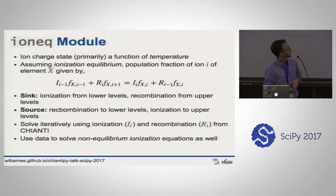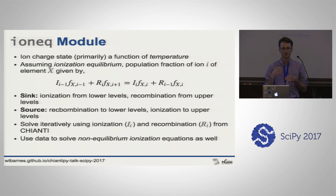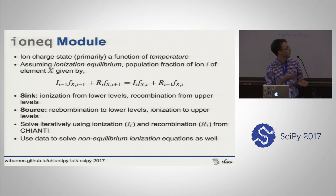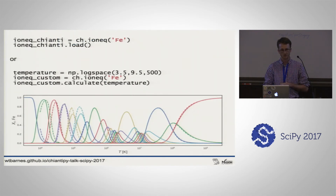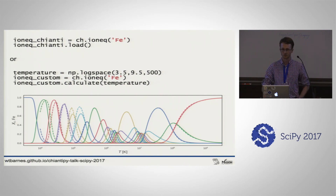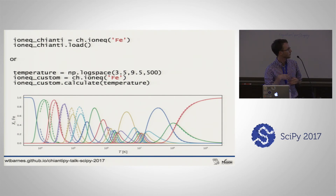We can also calculate ionization equilibrium - similar to level populations but a much simpler calculation of charge state as a function of temperature. This involves the recombination and ionization rates read from the Chianti database, and as long as you have a starting value you can solve it iteratively. ChiantiPy has a couple of datasets of ionization equilibrium already stored, or you can recalculate them based on a temperature array you've chosen. The plot shows every iron ion, with dashed lines for data loaded in and solid lines for calculated results.